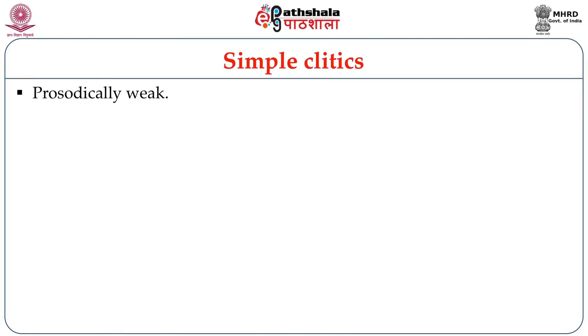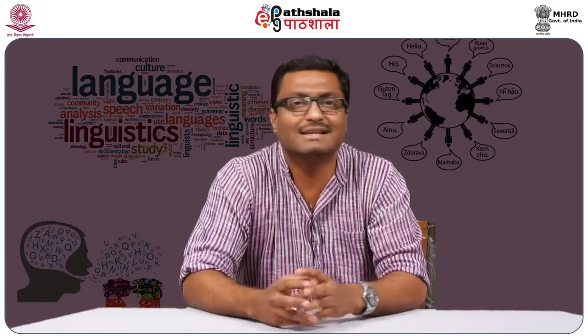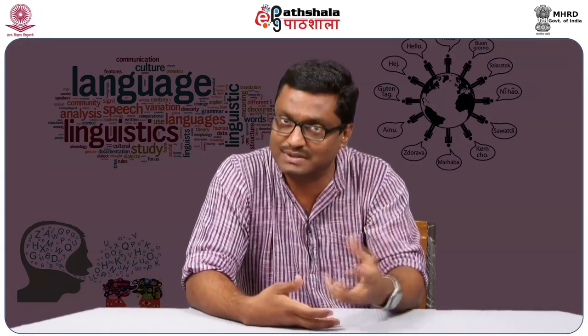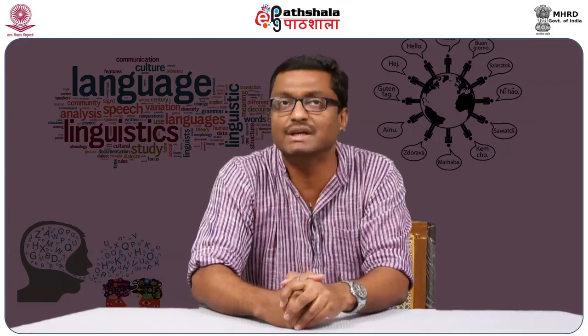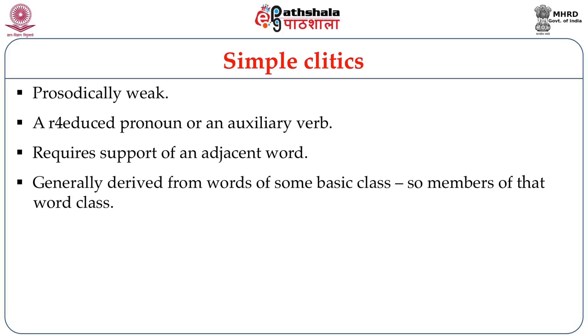Let us begin with the simple clitics. Simple clitics are understood to be prosodically weak elements, meaning there is a certain prosodic deficiency — something that does not allow them sometimes to get an accent. Sometimes they cannot form syllables by themselves and therefore must attach to some host to form a proper syllable and gain sufficient weight to be accented. They are very often reduced forms of pronouns or auxiliary verbs and require the support of an adjacent word. They are generally derived from basic word classes and therefore said to belong to that word class.